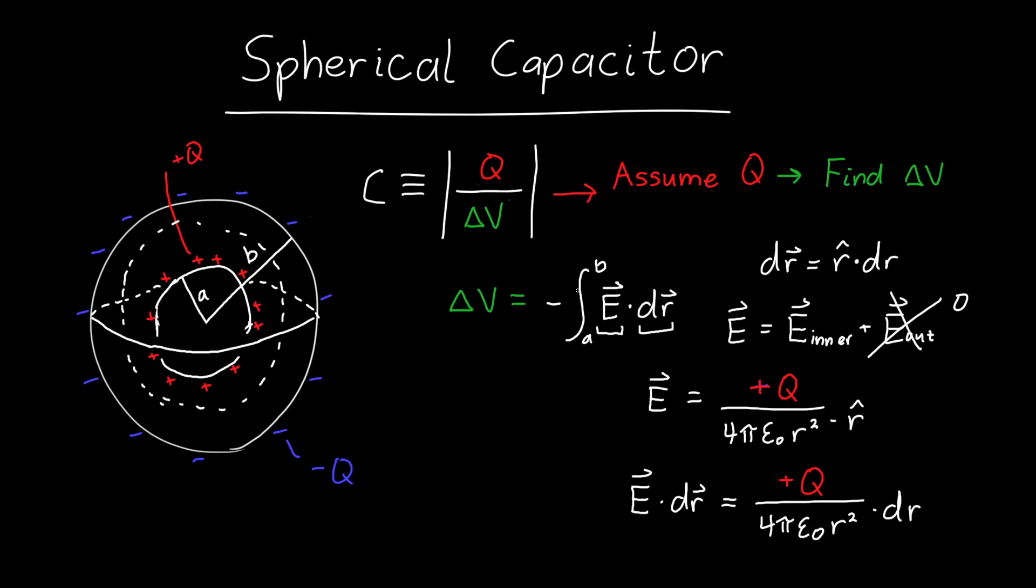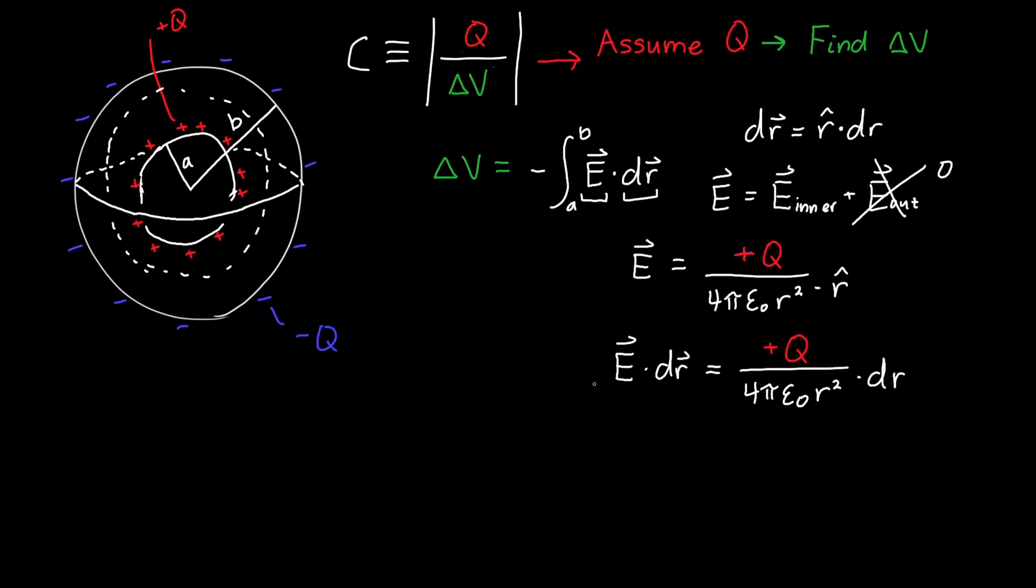All that remains is we just need to integrate this. We need to integrate E dot DR and slap a negative sign out front, from a radius of A to a radius of B. Most of these things are constants. Q is a constant, 4π epsilon naught is a constant, so we can pull them out of the integral.